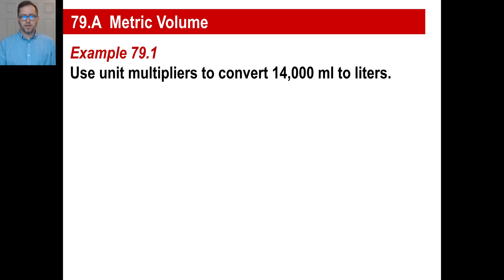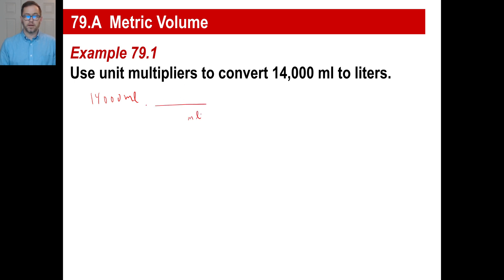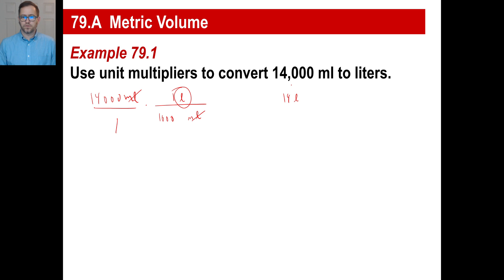Let's do an easy one first. We're going to convert 14,000 milliliters to liters. The first thing you do is write what you're given: 14,000 milliliters. We're going to write a fraction next, and we know it's going to have milliliters on the bottom. The conversion is: there are a thousand milliliters to one liter. So we can cross out the milliliters now and multiply across like a normal fraction. 14,000 divided by a thousand is just 14, and the only unit left is liters. So there's your answer.